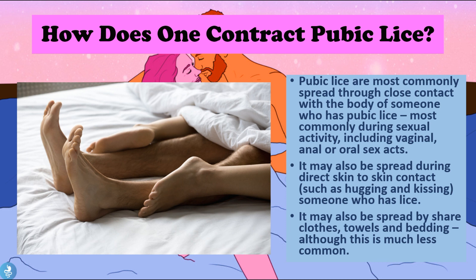So how does one contract pubic lice? Pubic lice are most commonly spread through close contact with the body of someone who has pubic lice, most commonly during sexual activity including vaginal, anal, or oral sex acts. It may also be spread during direct skin-to-skin contact such as hugging and kissing. It may also be spread by sharing clothes, towels, and bedding, although this is much less common. The lice can't jump or fly, so they can only be transmitted by crawling, which means very close human contact is needed.